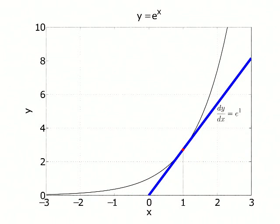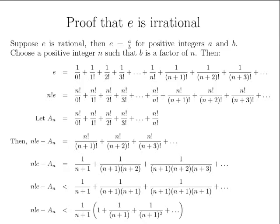2.71828... is e. The function e to the x is its own derivative. The natural logarithm is log to the base e.